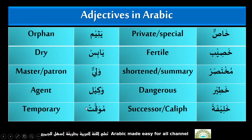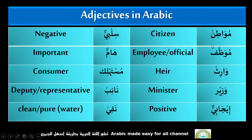Wakilun — Agent. Muakkat — Temporary. Mowatin — Citizen. Muabdaf — Employed Official. Waris — Heir. Wazir — Minister. Ijabiun — Positive. Silbiun — Negative. Hamun — Important. Mustahli — Consumer. Naib — Deputy, Representative. Naqq — Clean, Pure, about water.